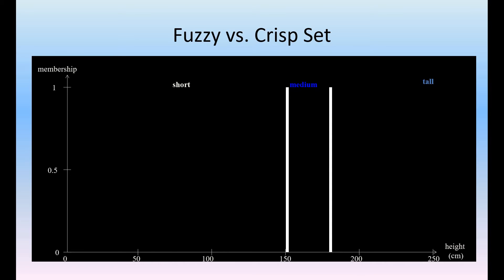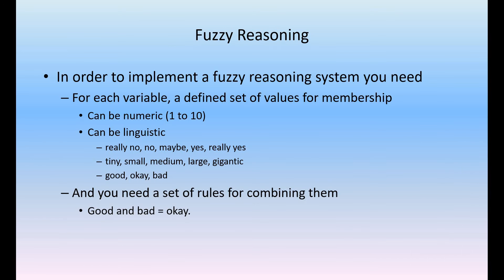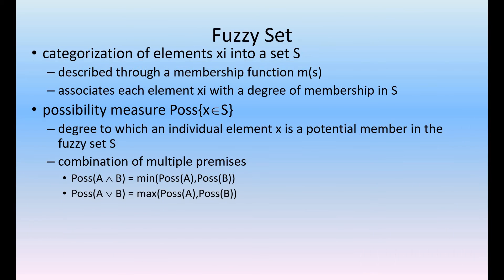What is the meaning of fuzzy reasoning? In order to implement fuzzy reasoning, similar to statistical reasoning, for each variable we define a set of values of the membership. It can be numeric — one to zero — or linguistic, like really, no, maybe, yes, or teeny small, small, medium, large, gigantic, good, bad. You set the rules for combining them — that kind of reasoning is fuzzy reasoning.